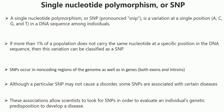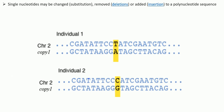There are different types of single nucleotide polymorphism. A single nucleotide may be changed — that is called substitution. It can be removed — that is called deletion. Or a new single nucleotide can be added to a polynucleotide sequence — this is called insertion. These are the different types of single nucleotide polymorphism.